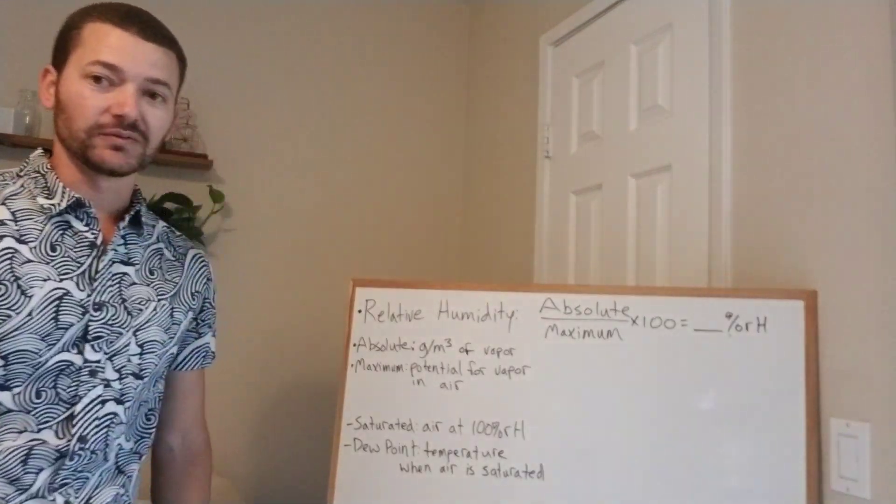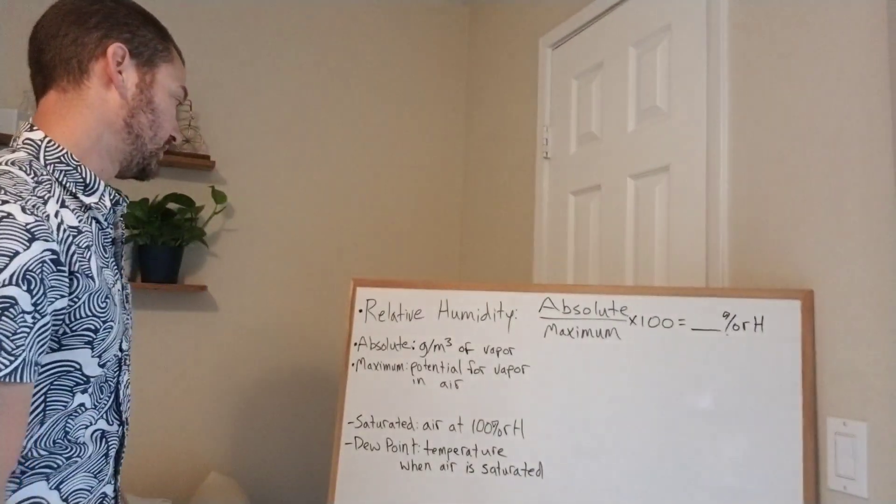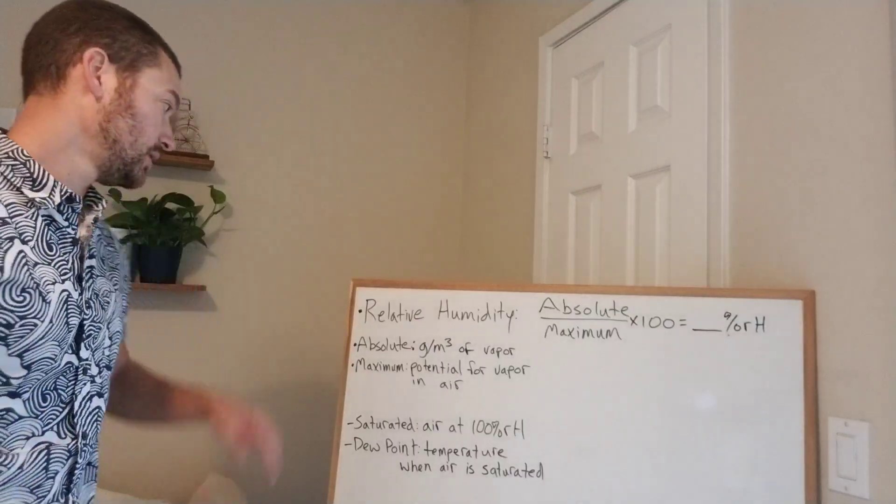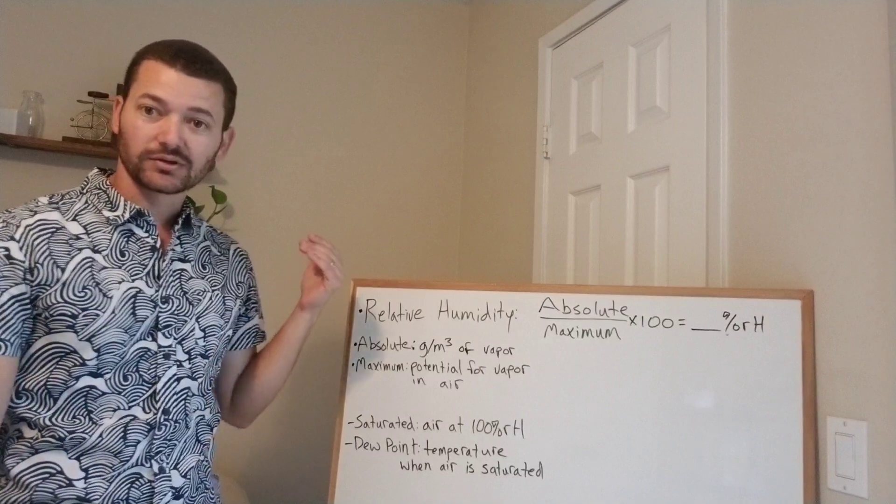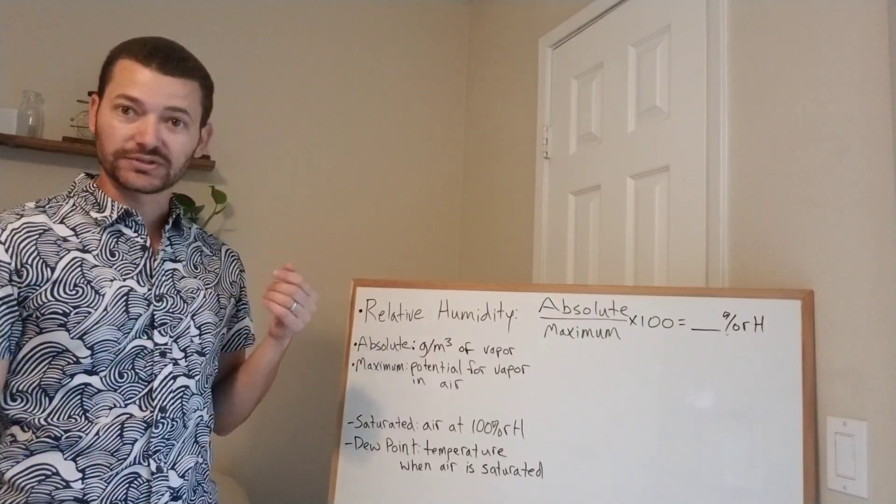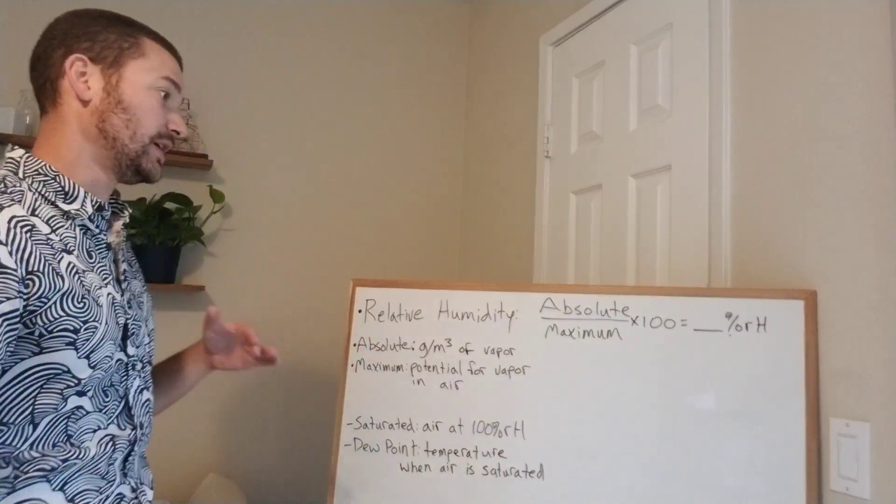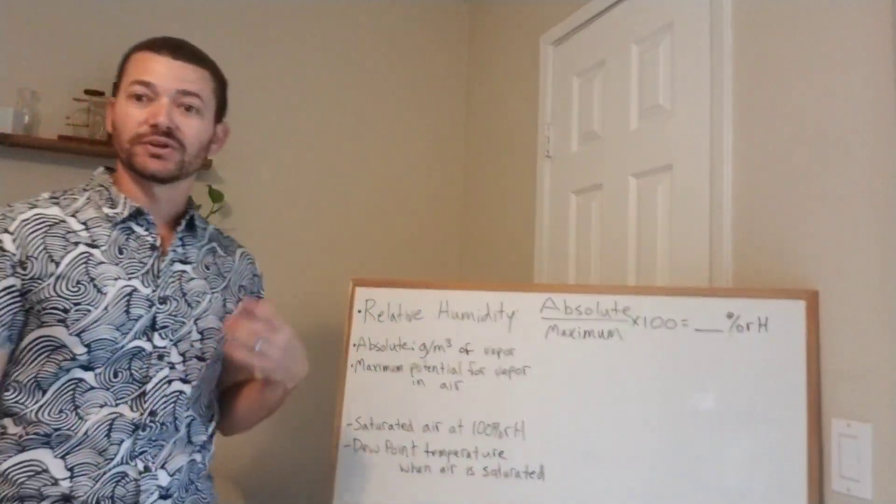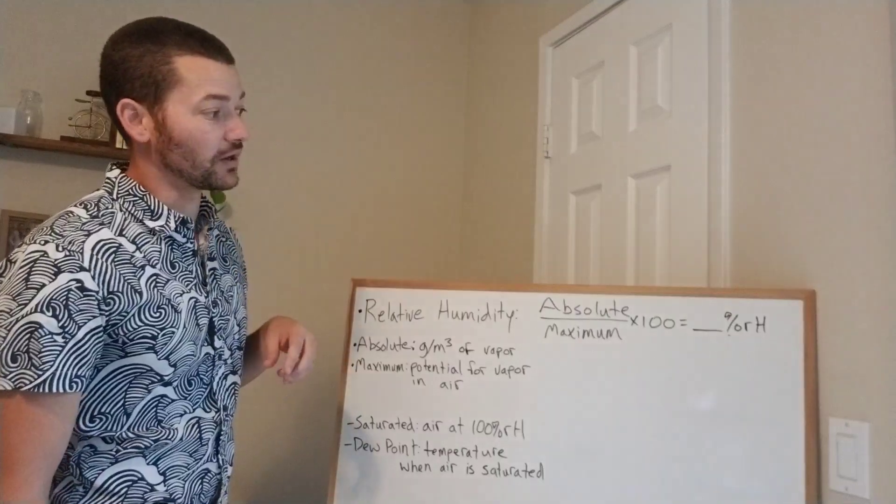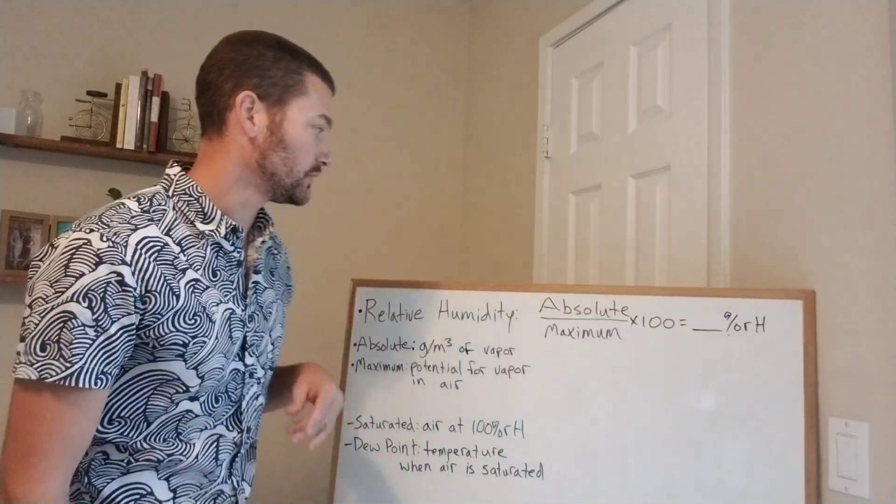Relative humidity is kind of hard to understand, maybe not, depending on the way that you actually think about it. Relative humidity is the way that people usually think about the amount of moisture in the air. So you say it's super humid, you're saying there is a high percent relative humidity. If you say it's really dry out, then you're saying there's a low percent relative humidity.